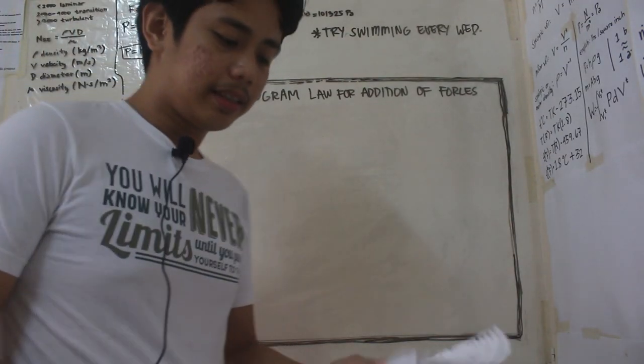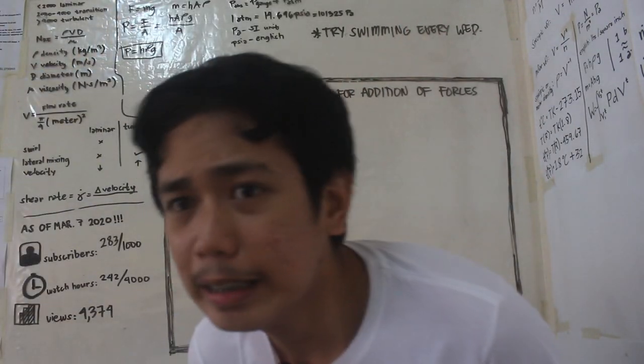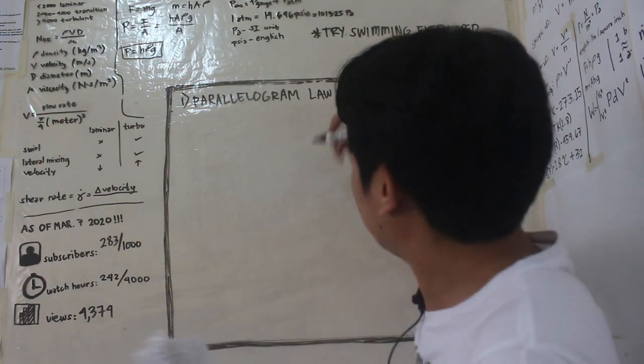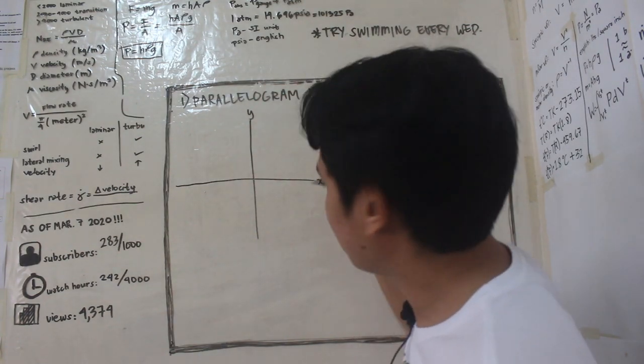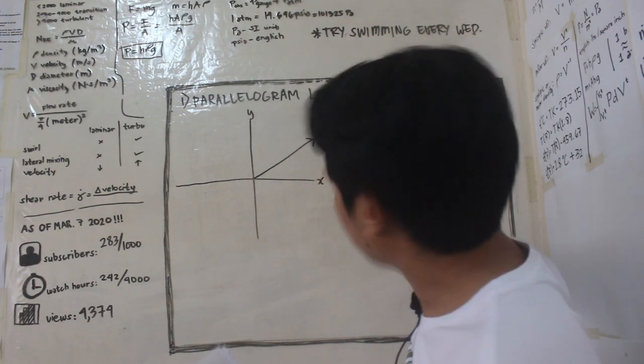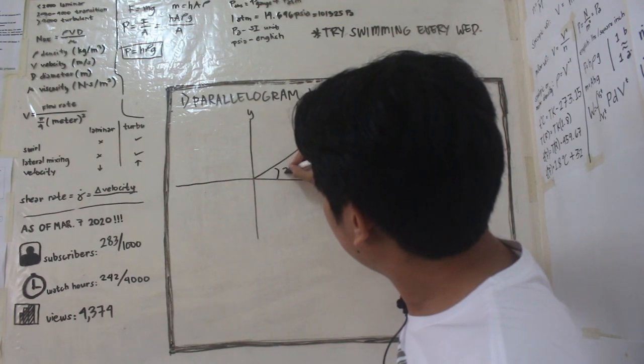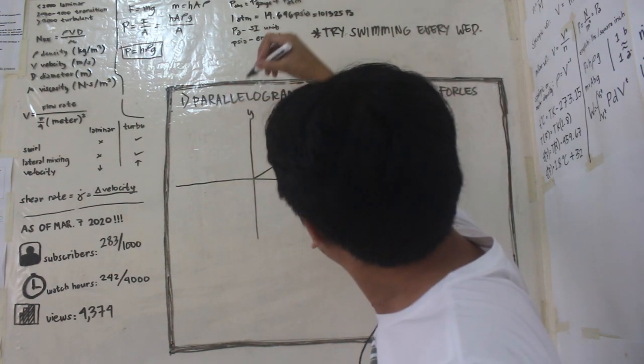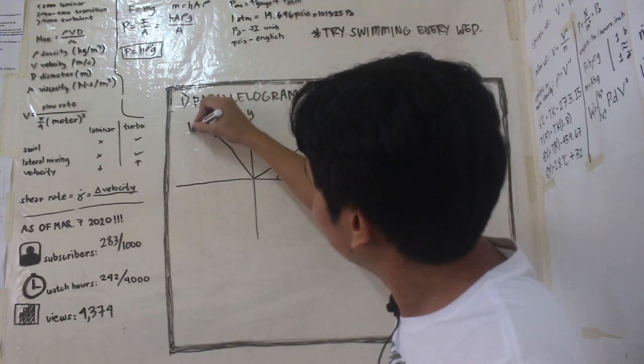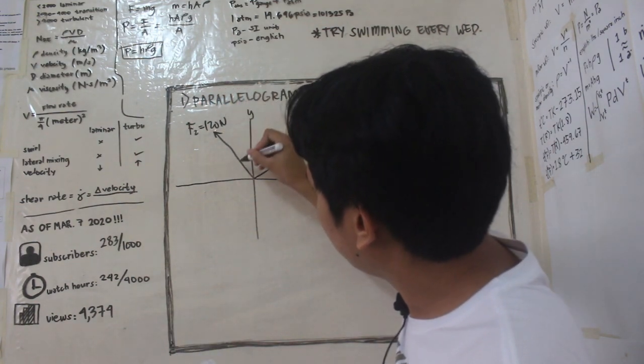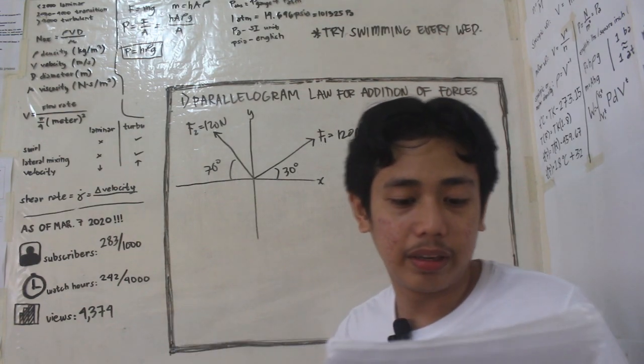So finding x and y component na tayo. So magbibigay tayo ng example dito. Okay, isulat natin yung example guys. So let's say for instance, this is our y-axis and this is our x-axis. Tapos dito, meron tayong vector, meron tayong force 1 na 120 newtons, 30 degrees. Tapos dito naman sa isang, f2 is equal to 120 newtons, 70 degrees. So let's find the x and y components of our resultant vector.